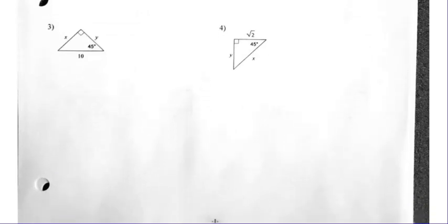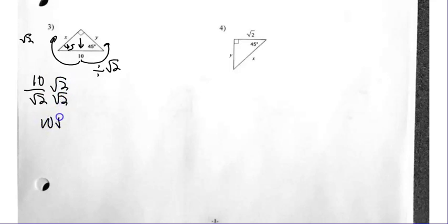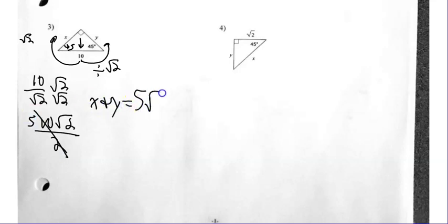Number three — notice it's a 45-45-90. My magic radical is radical two. I'm going from the longest side, the hypotenuse, to a leg. I'm getting smaller, so I'm going to divide by that magical radical. So I do 10 divided by radical two, rationalize, and I get 10 radical two over two. These cancel because two goes into 10 five times. So X and Y are five radical two.